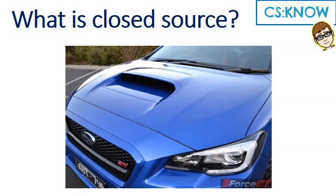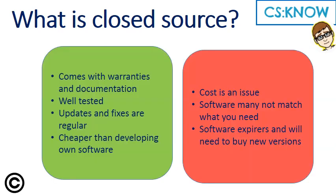Closed source is basically this: you're not seeing what's going on. It works, but you don't know how it works, and legally it's probably protected so that you can't look at the source code. We call this proprietary software. It is usually copyrighted — you will get in serious trouble if you access the source, and replicating or using the source code will get you in legal trouble.